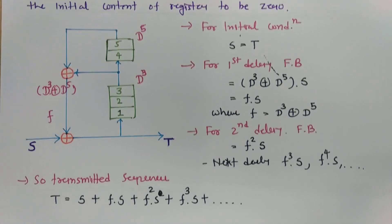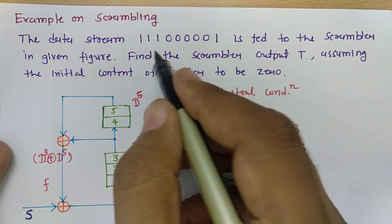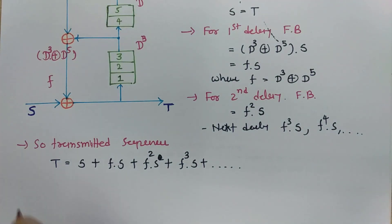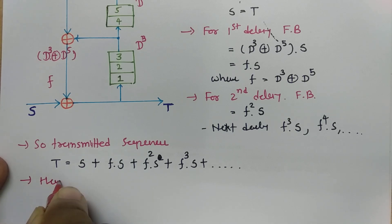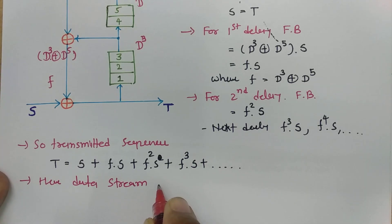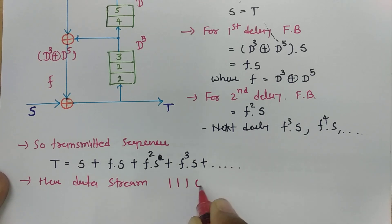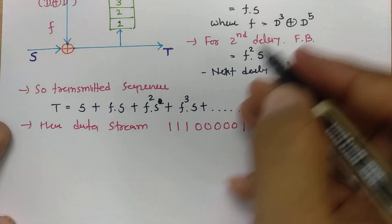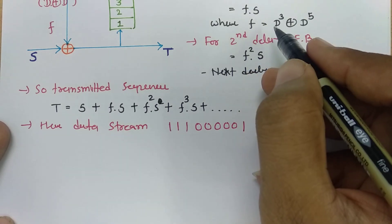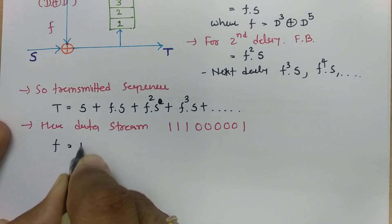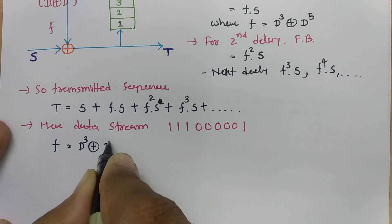Now if you see the question, we have the data stream: triple 1, five times zero, and 1. So here we have the data stream 111, 00000, 1. To find the transmitted sequence, we need to do the basic calculation. We already know what f is: f is d³ mod-2 sum d⁵.